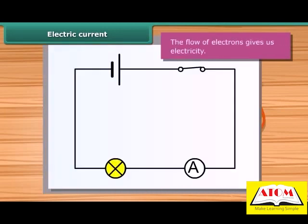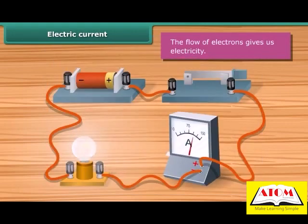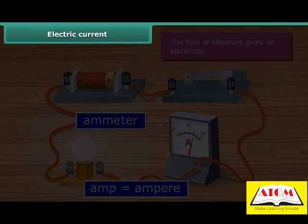An electric current consists of a movement of negative charges, that is, electrons. The flow of electrons gives us electricity. Electric current is measured by an ammeter.